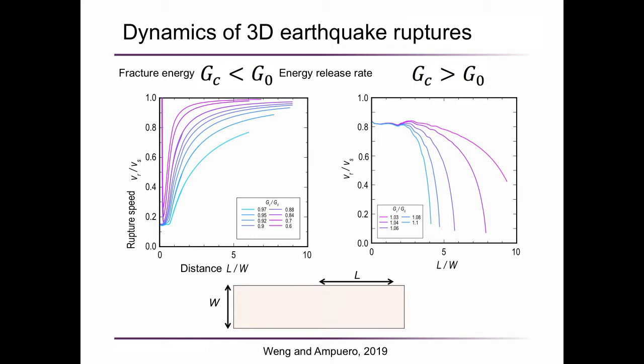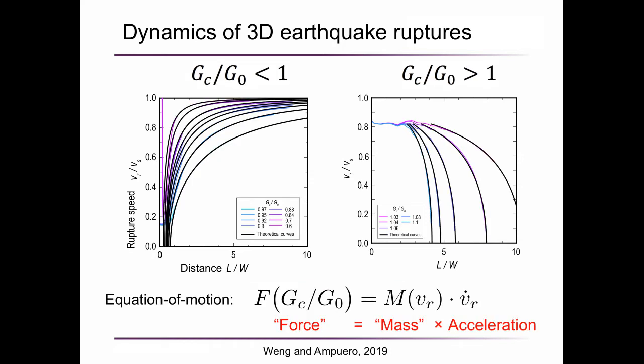Here the energy release rate is a function of the rupture width instead of the length. When the energy release rate is larger than the fracture energy, the rupture accelerates. If the energy release rate is smaller, then the rupture decelerates and finally stops. We were able to fit these numerical results with a theoretical equation of motion. This equation is fundamentally different from the classical 2D equation of motion. In this equation, the left term is what we call a force term. It is a function of the energy ratio, the ratio of the fracture energy to the energy release rate. On the right is the mass function, and the last term is the rupture acceleration.